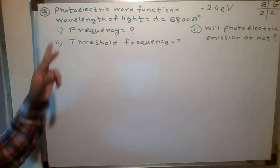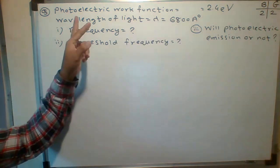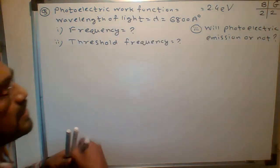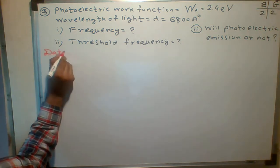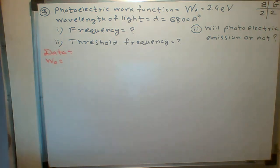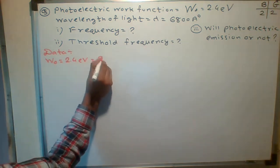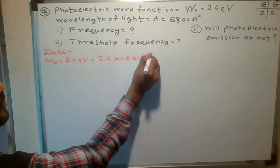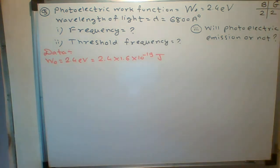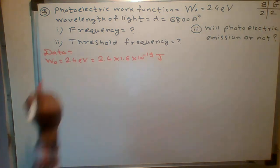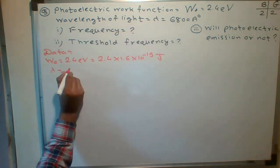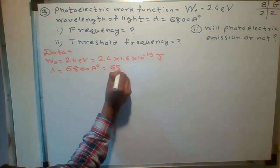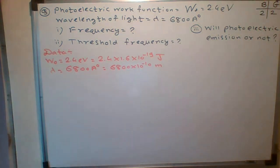The next question: light is incident on a surface. The surface has some photoelectric work function — the symbol is W naught. The photoelectric work function W naught is given as 2.4 electron volt. Whenever electron volt is given, you have to convert into joules by multiplying by 1.6 into 10 to the minus 19. The wavelength of light lambda is given as 6800 angstrom, which is 6800 into 10 to the minus 10 meters.